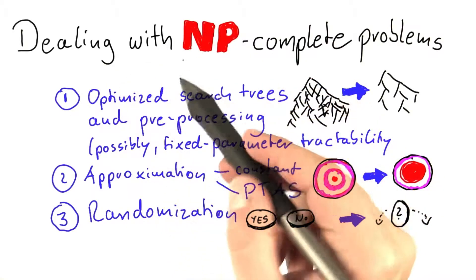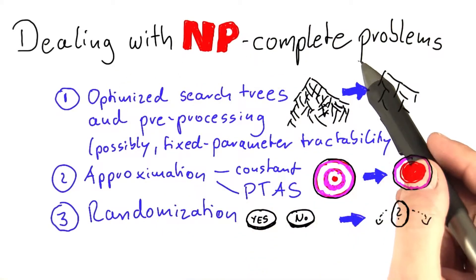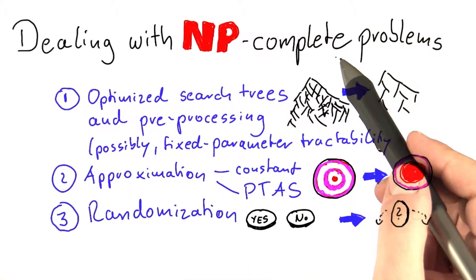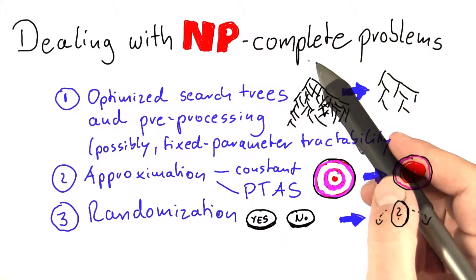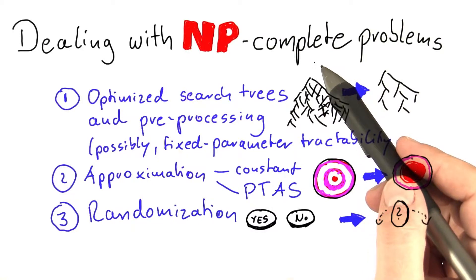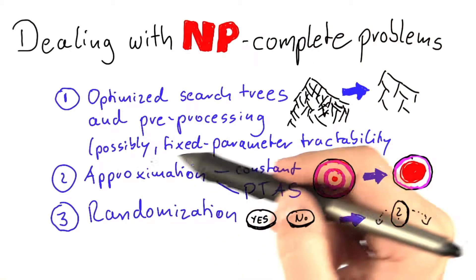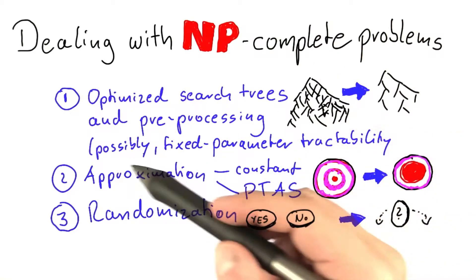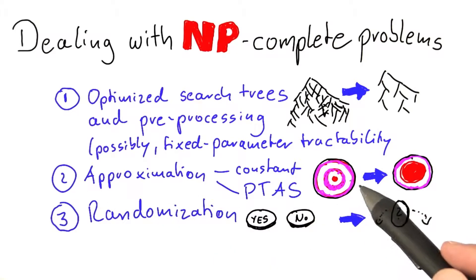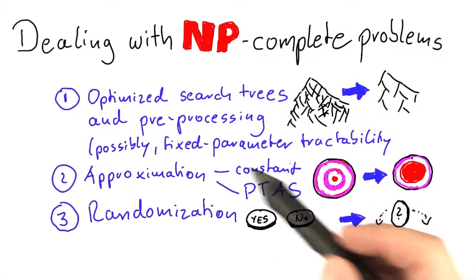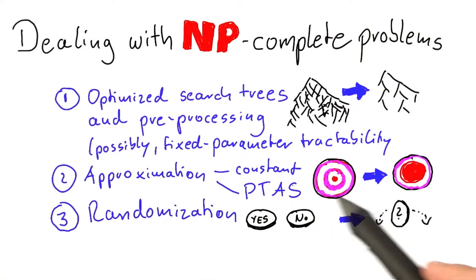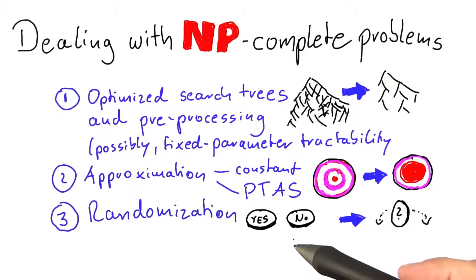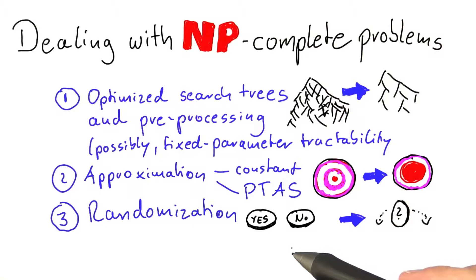You now know the basics of dealing with NP-complete problems, or NP-hard problems if we're talking about an optimization problem: designing intelligent algorithms to find an exact solution, or failing that, accepting approximate solutions or even incorporating randomness into your algorithms.